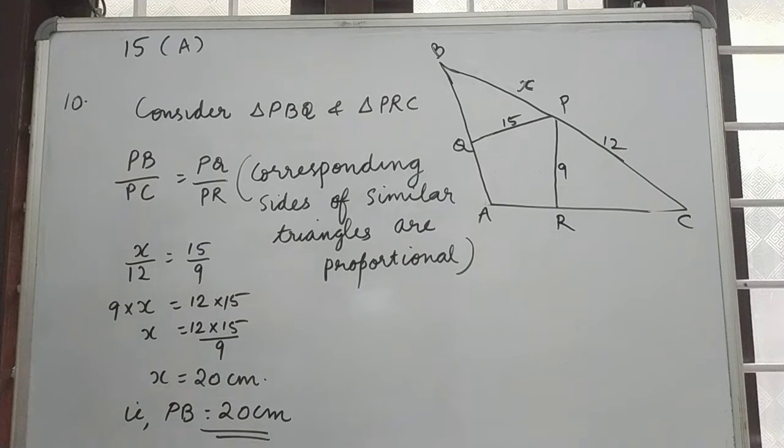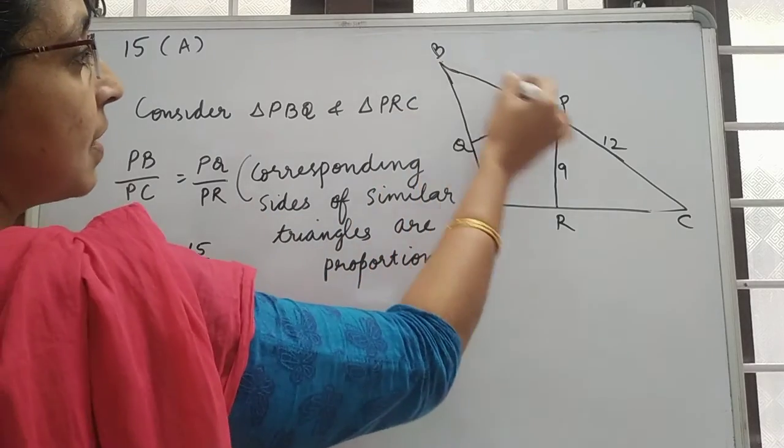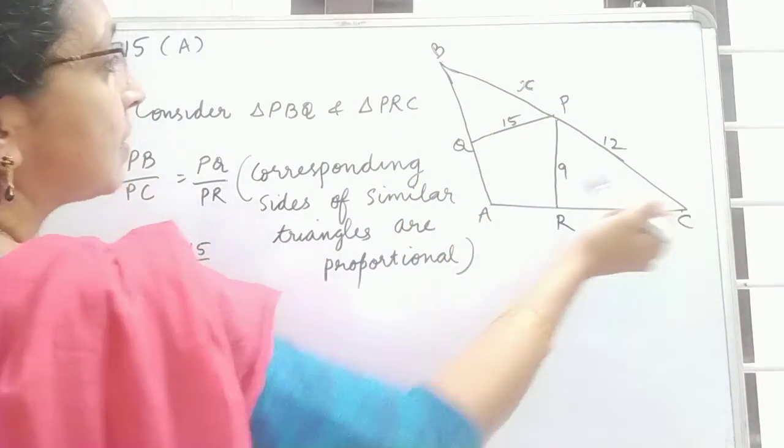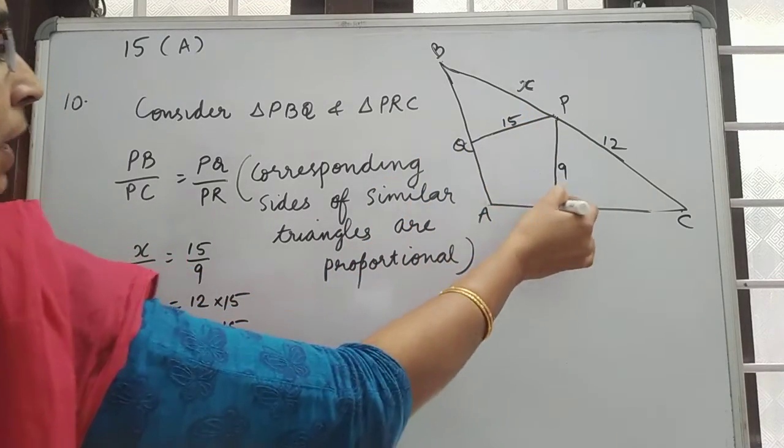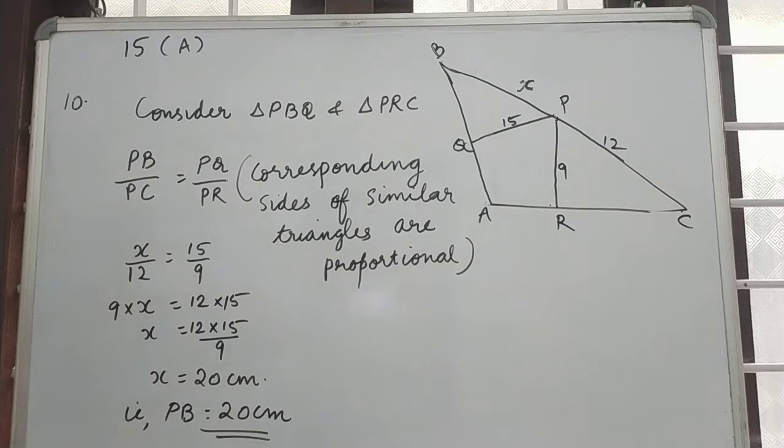Corresponding sides of similar triangles are proportional. So we can write PB divided by PC is equal to PQ divided by PR.